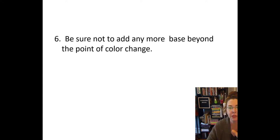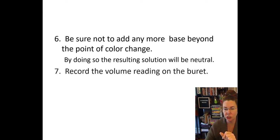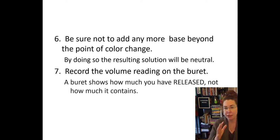Now, it's super important that you don't add any more base beyond the point of that color change. If you do, that is called overshooting your endpoint. By keeping it at that point, you should have a neutral solution. And we can record the volume reading on our burette. Now, the burette, remember, shows you how much you have released, not how much it contains. So if it takes 10 milliliters of base to reach the endpoint in our acid, that would be reflected in the reading on our burette. Now, one little thing I want to point out,